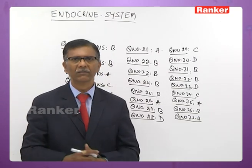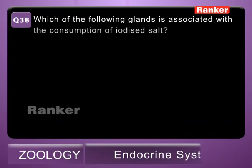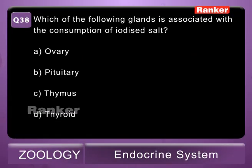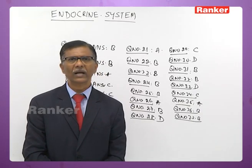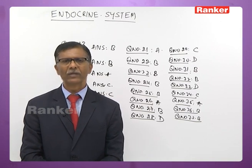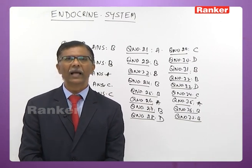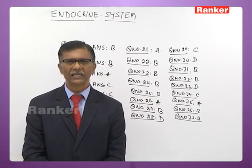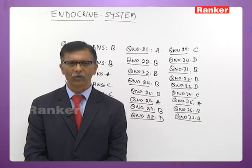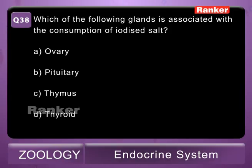Thirty-eighth question: which gland is associated with consumption of iodized salt? A - ovary, B - pituitary, C - thymus, D - thyroid. The thyroid gland absorbs iodine from the blood and uses it to synthesize thyroxine hormone. The correct answer is D — thyroid.